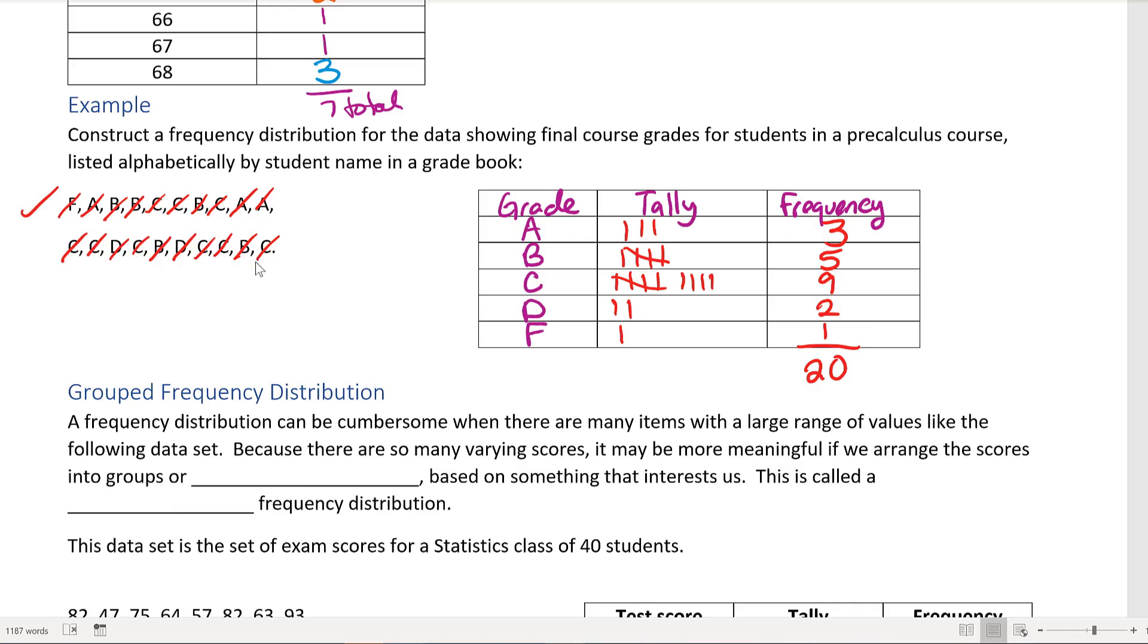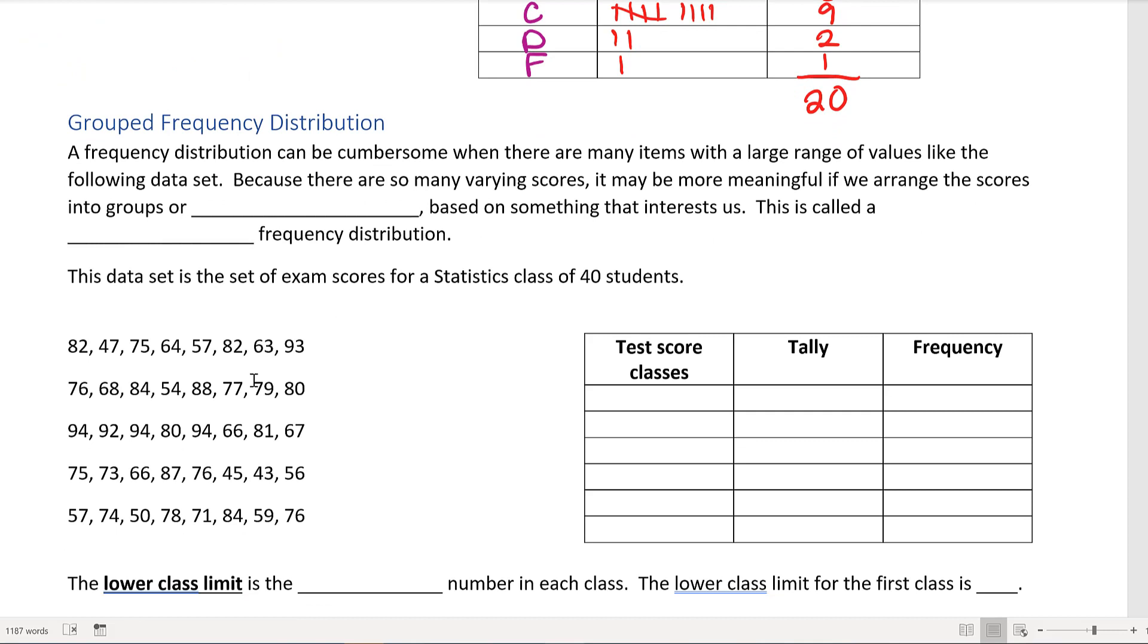Sometimes a frequency distribution can be cumbersome when there are many values or a large range of values like this data set. I have probably about 40 students here and their grades range from the 40s all the way up to the 90s. There are too many varied grade values. It may be more meaningful if we arrange the scores into groups or what we call classes based on something that interests us. This is called a grouped frequency distribution.